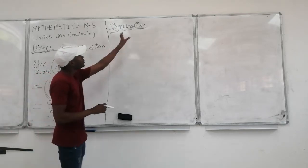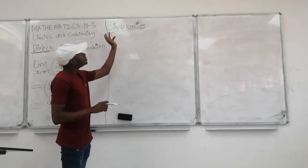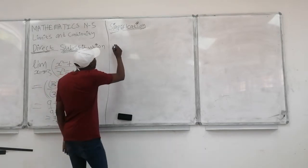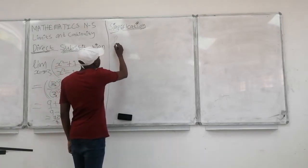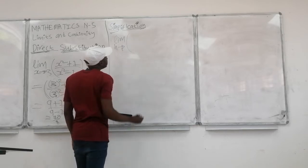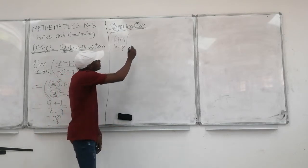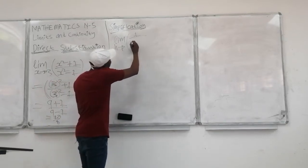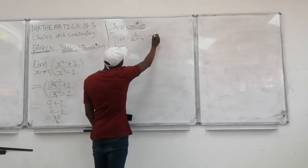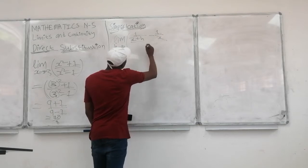Now one more method: simplification. Let's take a given equation — the limit when h approaches 0 of 1 over (x plus h), minus 1 over x, all over h.